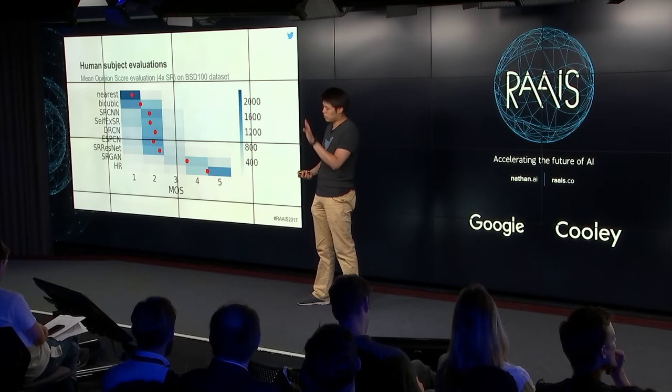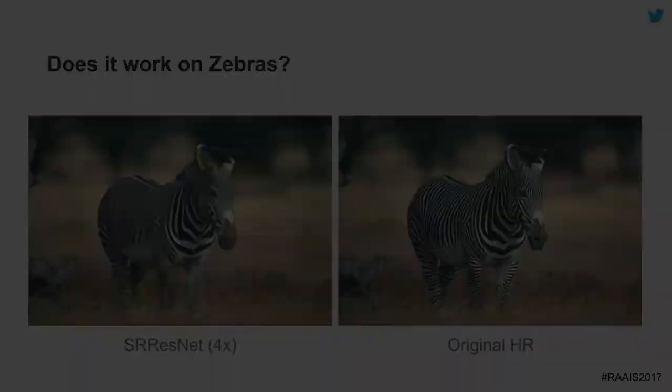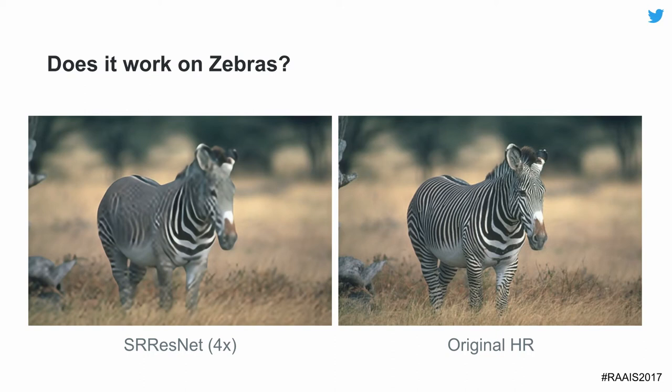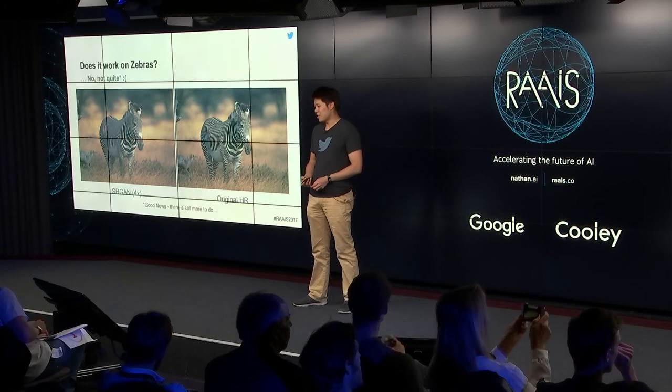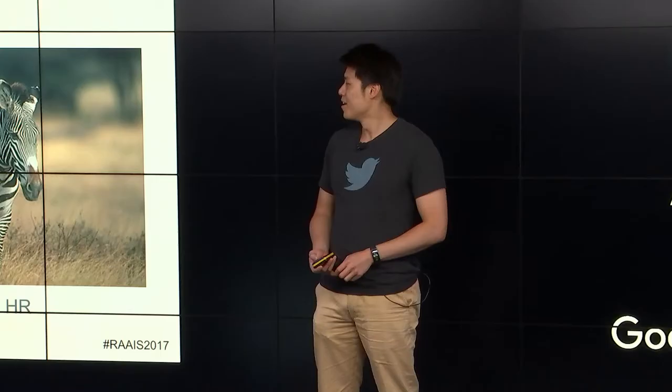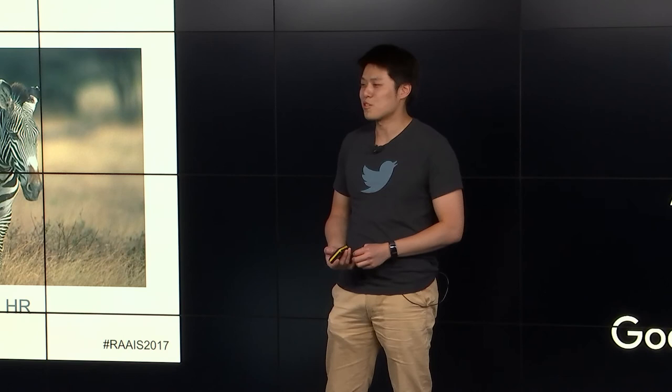One question that remains: does it work on zebras? With the ResNet approach, this is actually a slightly harder problem — four times super resolution in each dimension rather than three. Unfortunately it doesn't quite get there. It's obviously higher in fidelity, but the correctness of what we'd expect for a zebra is not quite right. As one of my colleagues says: good news, that means there's still more to do. Deep learning doesn't just solve everything magically.